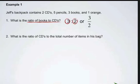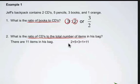The second question could be, what is the ratio of the number of CDs to the total number of items in his bag? In this case, we need to take a look at how many items does he have in total in his bag. With the 2 CDs, 5 pencils, 3 books, and 1 orange, if we add up all of those items, he has 11 items in his bag.